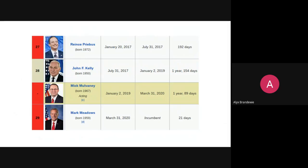The chief of staff is a job with very high turnover due to its demands. In his eight years in office, President Obama had five different chiefs of staff, with Dennis McDonough serving the entire second term. President Trump is on his fourth chief of staff — starting with Reince Priebus, then John Kelly, Mick Mulvaney, and currently Mark Meadows. If there's a terrorist attack somewhere in the world in the middle of the night, the chief of staff has to respond to it. It's a huge time demand and an extremely stressful position.